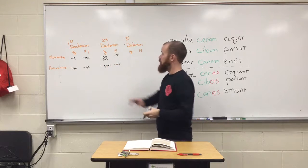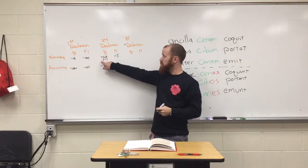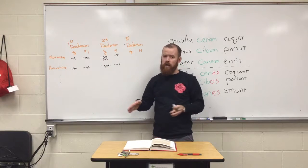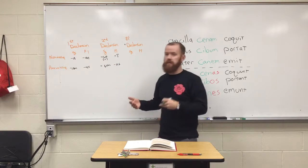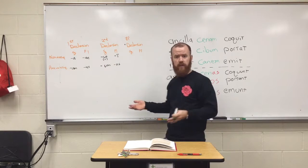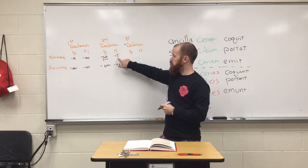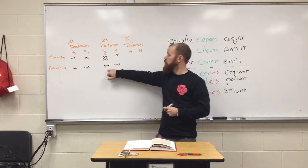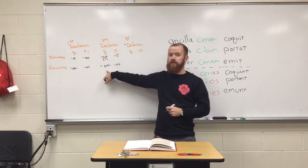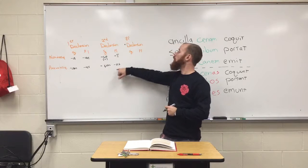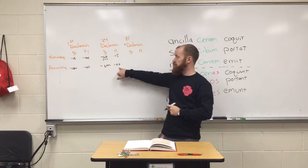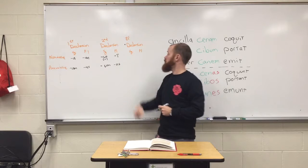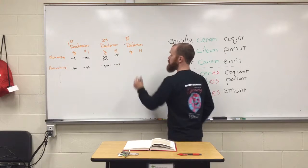Second declension: '-us' for singular nominative subject — sometimes with a few '-r' exceptions like 'puer.' '-i' for plural nominative subject; '-um' for singular accusative direct object — the 'u' changes to an 'o'; '-os' for plural accusative direct object.